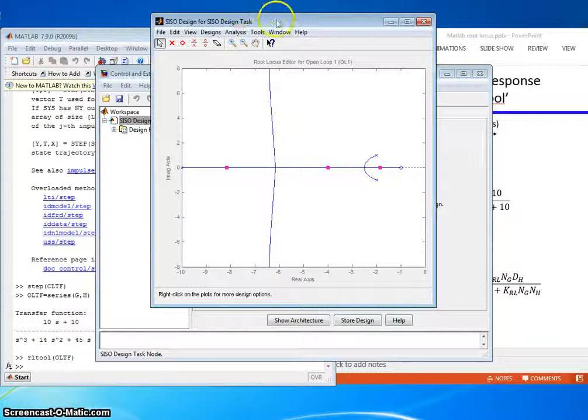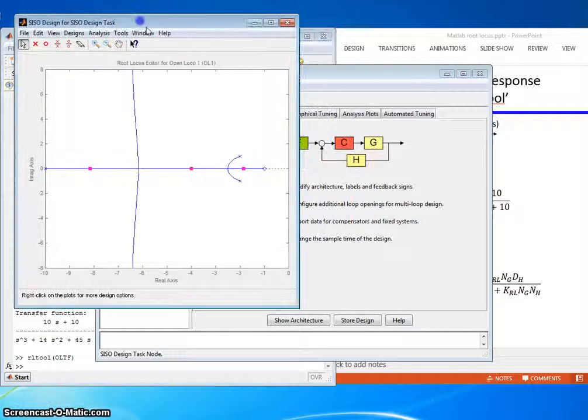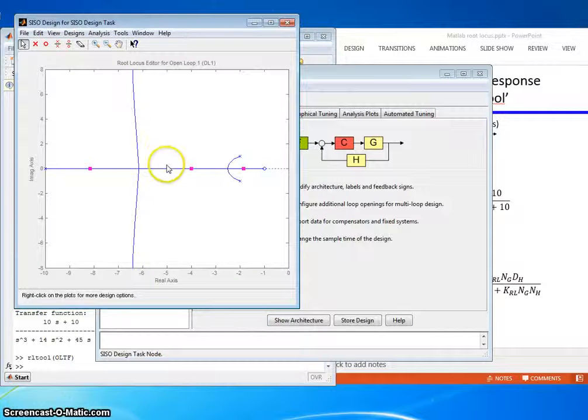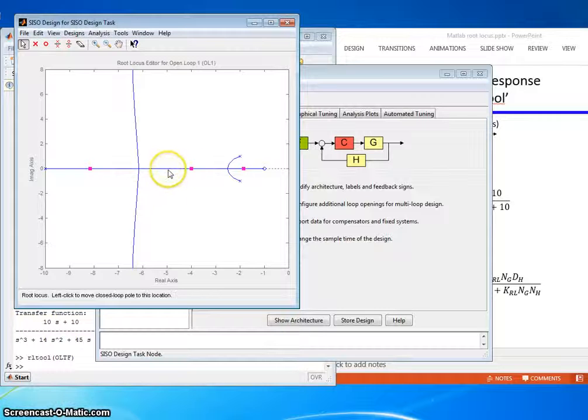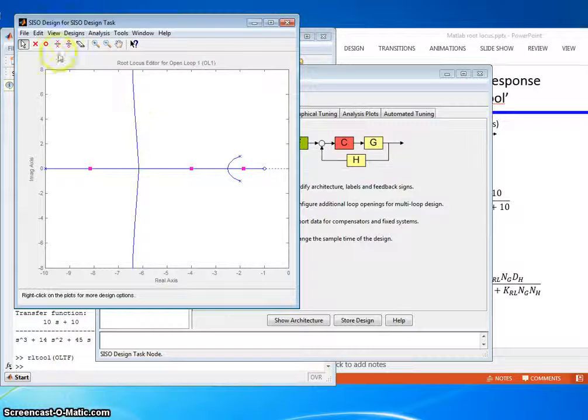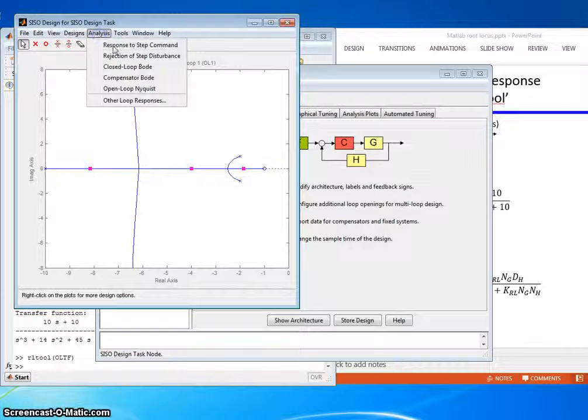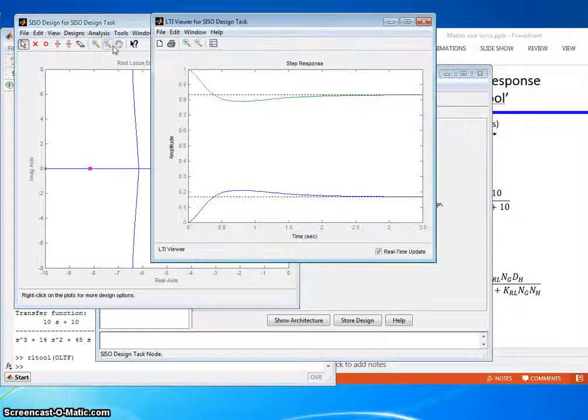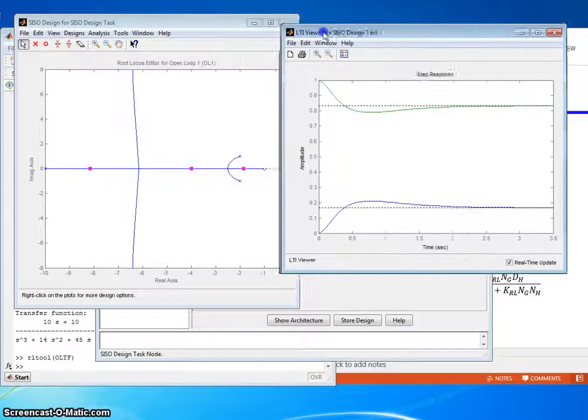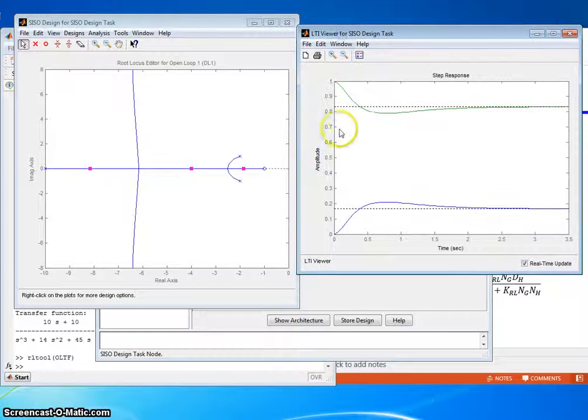All right. We have our root locus here and we can move this pink box. It defaults to KRL equal to 1, and as we move the pink box, it'll tell us what the KRL value is to get us the closed loop poles where we want. But what I want to do here is analysis, response to step command. It's going to give us another window, so I can put these windows side by side.